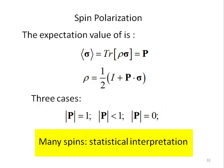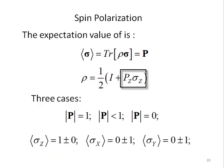This is a statistical treatment, and the spin density operator gives the state of an ensemble of spin 1/2. But what if the spins are polarized along the z-axis, so Pz is not 0, but Px and Py are both 0?